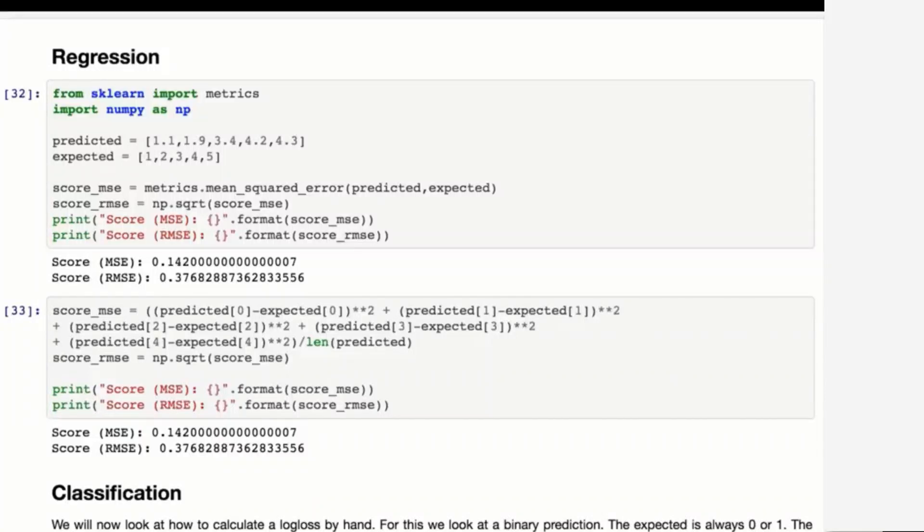You can see the code here. The code near the top is demonstrating how you would calculate mean square error and then root mean square error using the built-in functions. Normally this is how you want to do it and this is what we saw earlier. However, if you want to see how to actually calculate this, you can see that we get the exact same results.